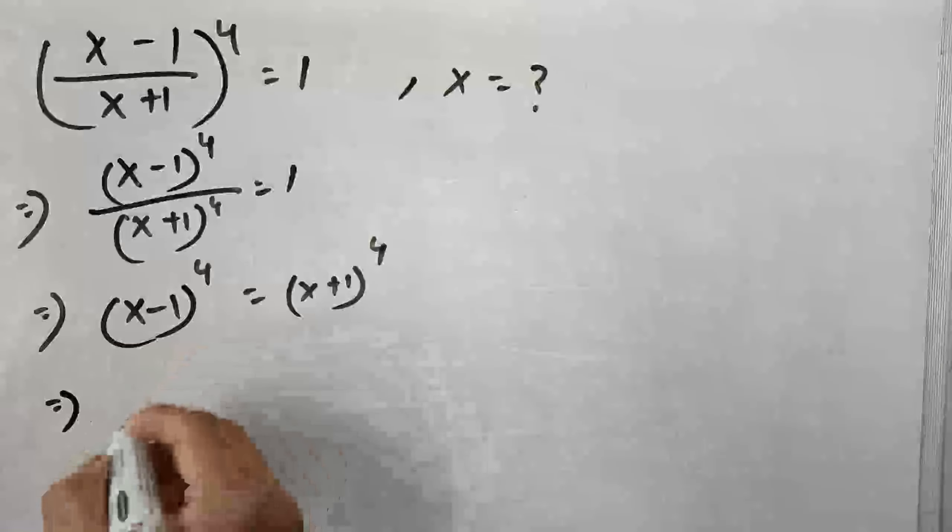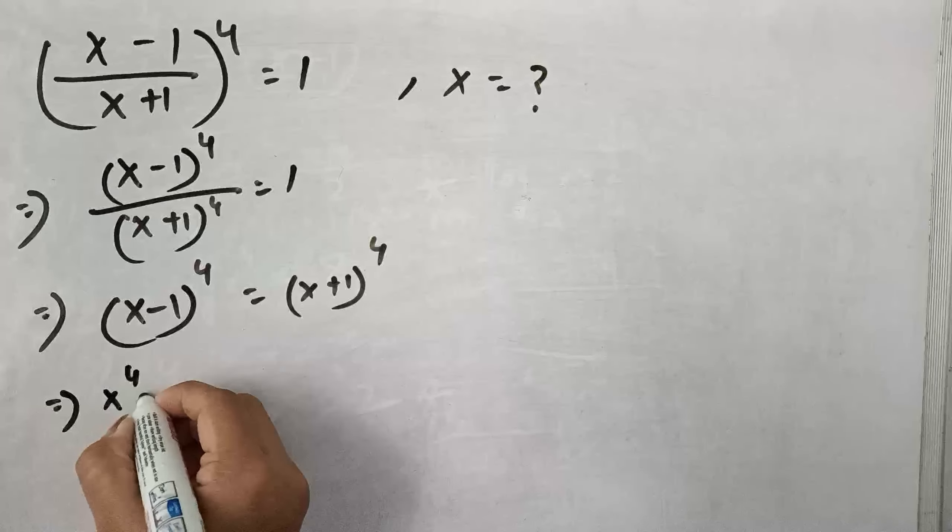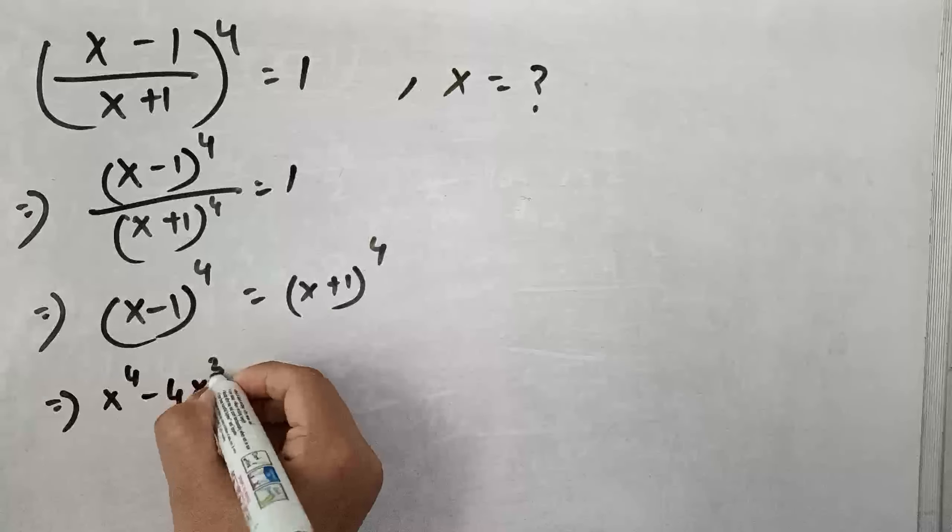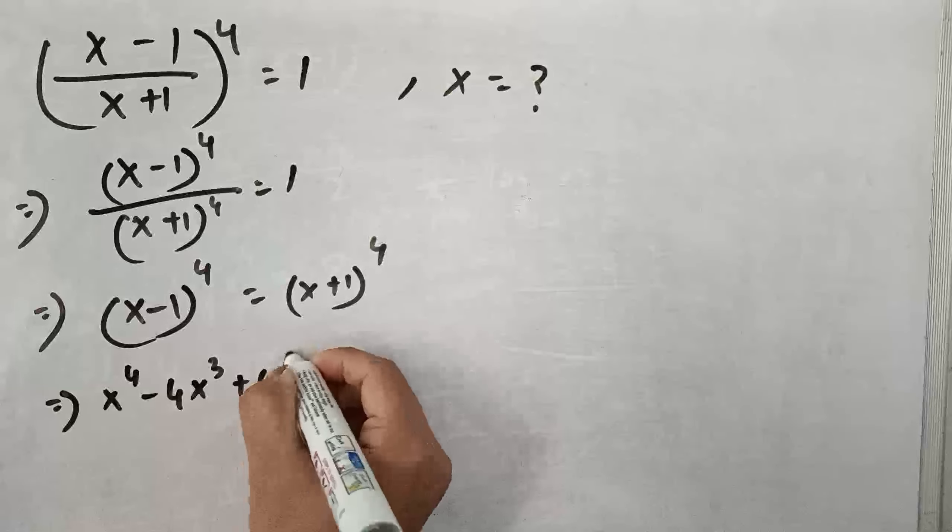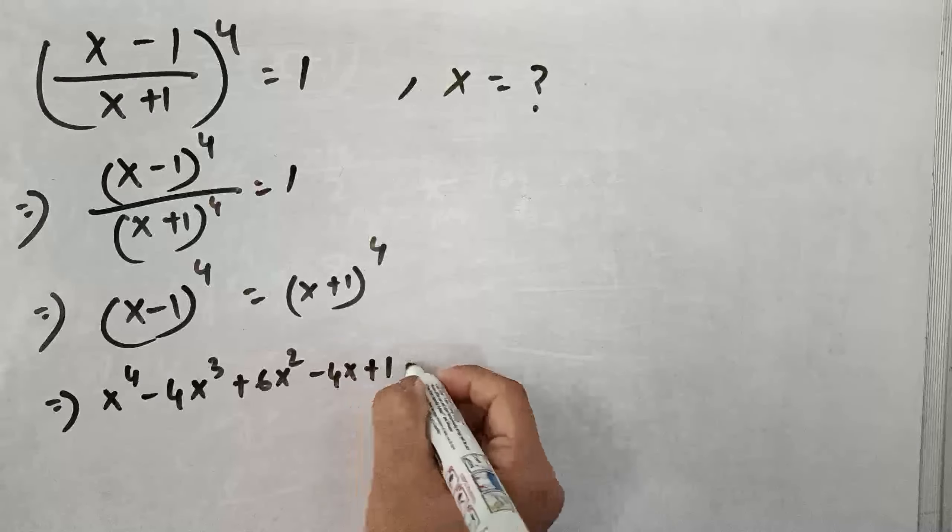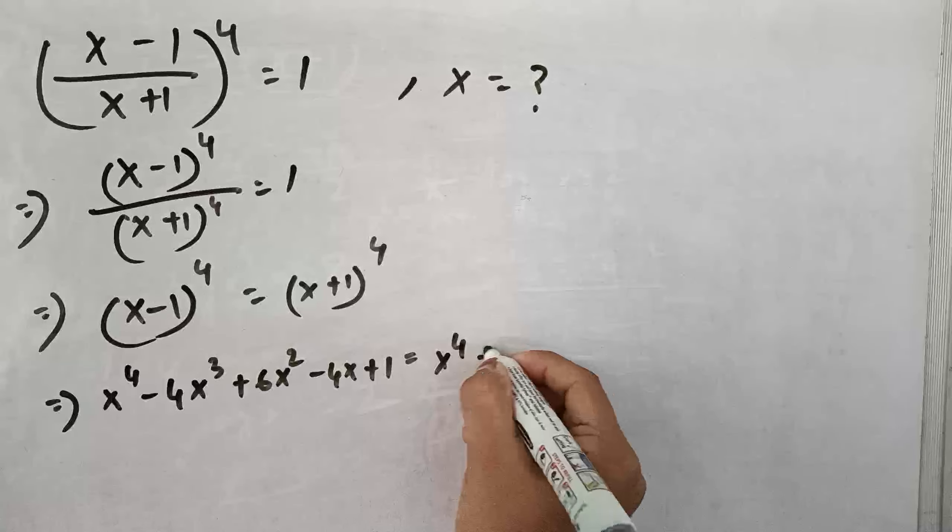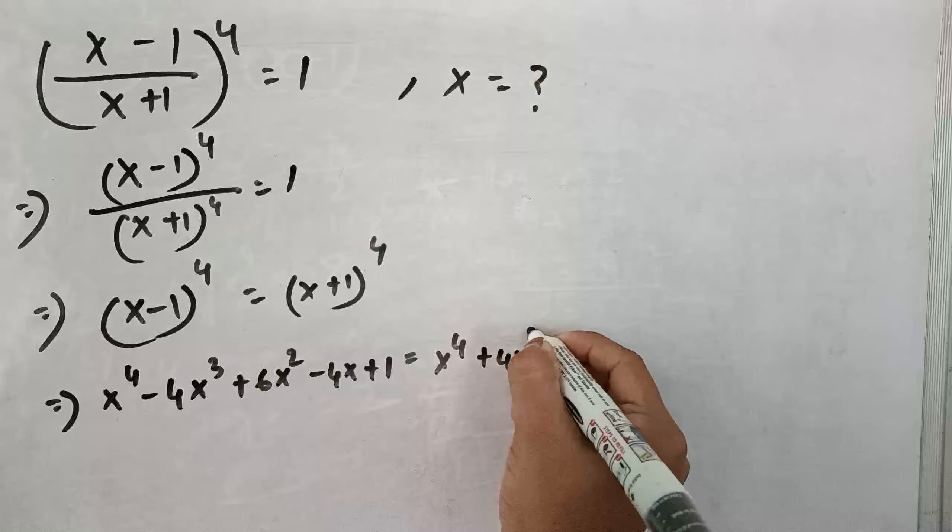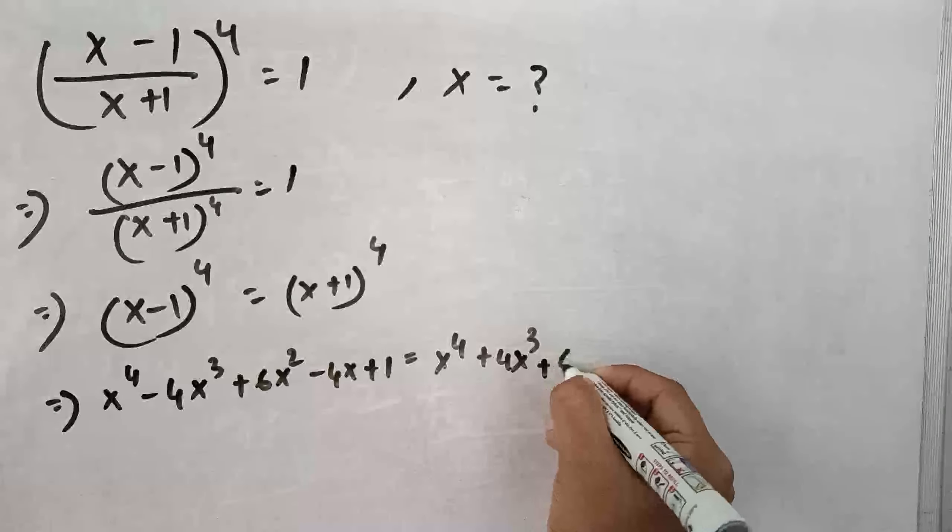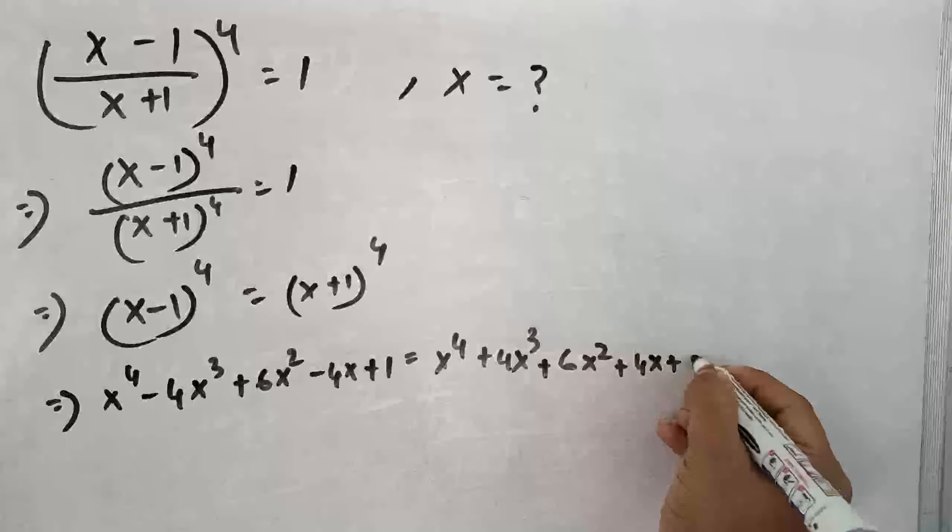So, x minus 1 to the power 4 which is equals to x to the power 4 minus 4 x cube plus 6 x square minus 4 x plus 1 equals to x to the power 4 plus 4 x cube plus 6 x square plus 4 x plus 1.